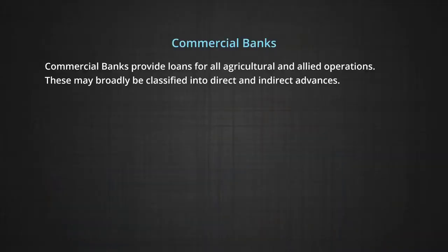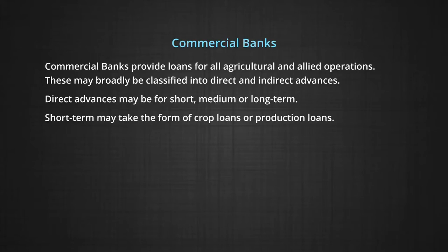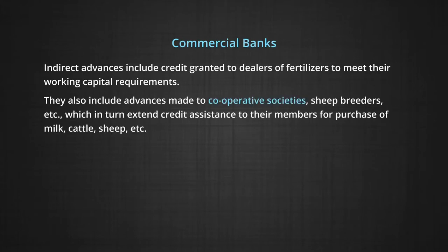Commercial banks provide loans for all agricultural and allied operations, broadly classified into direct and indirect advances. Direct advances may be short, medium, or long term. Short-term advances take the form of crop loans or production loans, repaid within one to two months after harvest. Medium and long-term loans are granted for capital-intensive development programs, with a maximum repayment period of 15 years. Indirect advances include credit granted to dealers of fertilizers and advances made to cooperative societies.